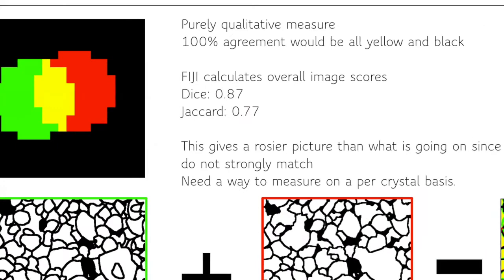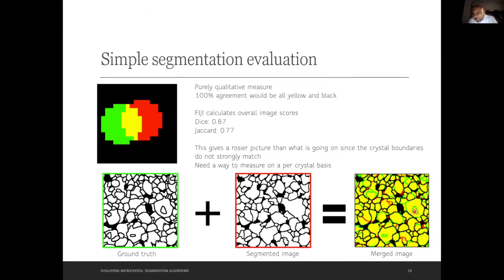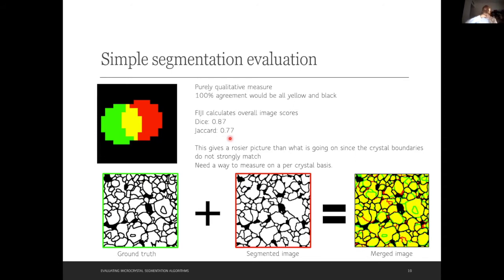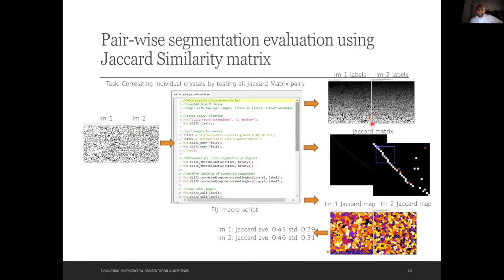Black means perfect overlap in the negative domain; green means the ground truth wasn't matched by the segmented image; and red means the computer added something extra. You can clearly see a mismatch — the green ground truth versus the red where it over-segmented. Even then it gives rosy projected accuracy values like 87–77%, which is not actually correct because it just overlaps pixels. What we need is object-level overlap where individual crystals are matched with each other.